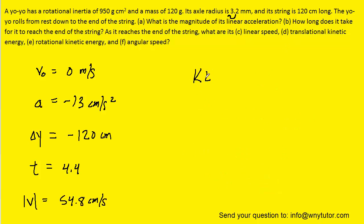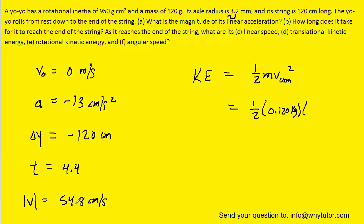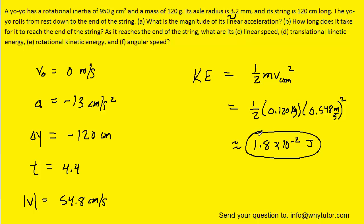For part D, to calculate translational kinetic energy, we simply use the expression ½ times the mass times the speed about the center of mass squared. We just figured out that speed. The mass was given as 120 grams, but we want to convert to standard units, so we'll use 0.120 kilograms. We'll change the final speed about the center of mass to meters per second by moving the decimal two places to the left, giving us 0.548 meters per second, then square it. This works out to be roughly 1.8 times 10 to the minus 2 joules. So this is the correct answer to part D.